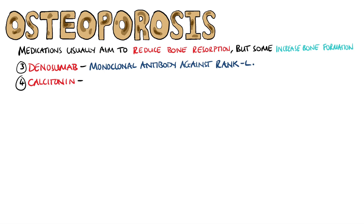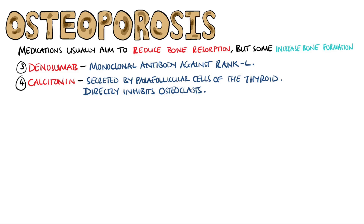The last one to mention before we move on to the ways of increasing bone formation is calcitonin. This directly inhibits osteoclasts and is secreted by the parafollicular cells of the thyroid. It hasn't been shown to be as effective as bisphosphonates in osteoporosis, but can be used alongside bisphosphonates, especially in treating hypercalcemia. The main side effect is hypocalcemia.